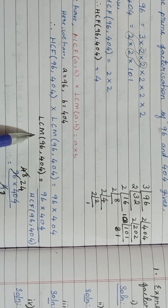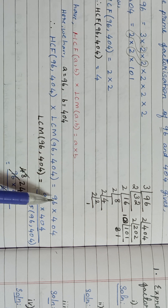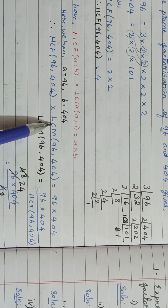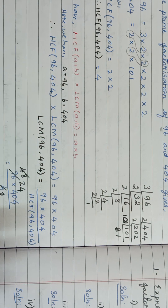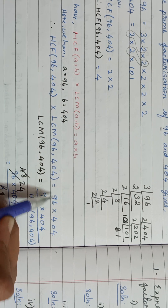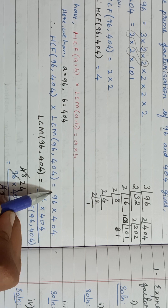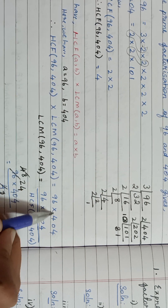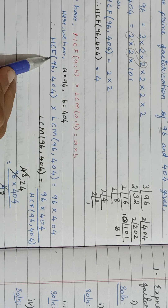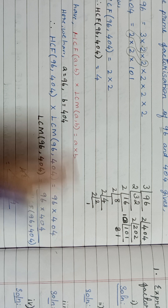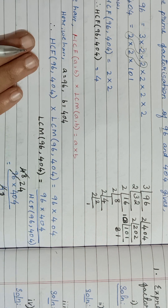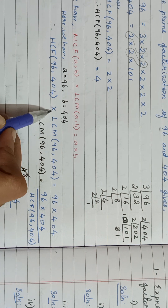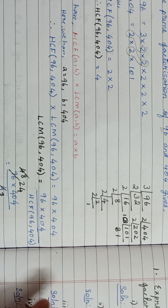From this you are finding LCM. You already know the value of HCF. Keep LCM on the left side. Write the value on the right side: 96 into 404. Now bring the HCF value to the right hand side.